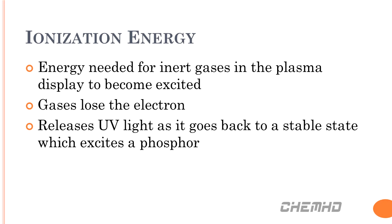Next is how ionization energy is involved in plasma displays. Basically, this is the amount of energy needed for the inert gases to become excited and lose an electron. Since inert gases have a full valence electron shell, a lot of energy is needed to take an electron from them. This is why plasma screens consume high amounts of energy and why plasma is not used in portable devices. The inert gases become excited, then eventually return to a relaxed state, releasing ultraviolet light. The UV light strikes a phosphor, exciting it, which produces a color.